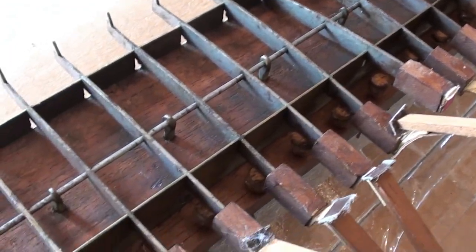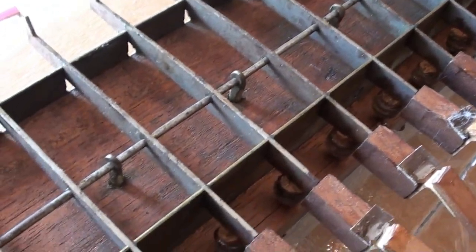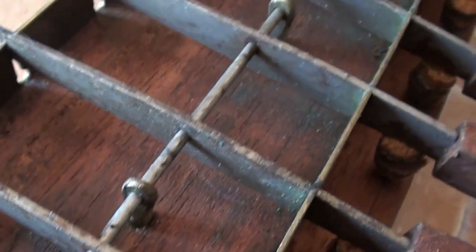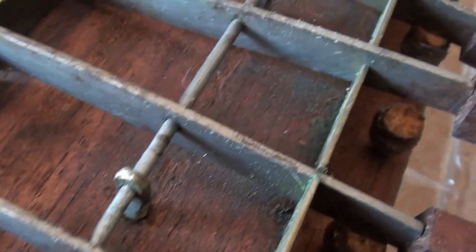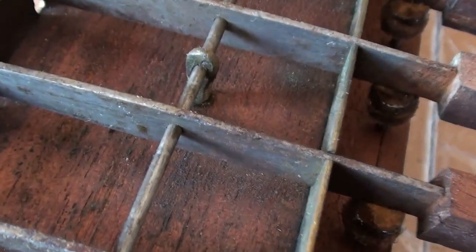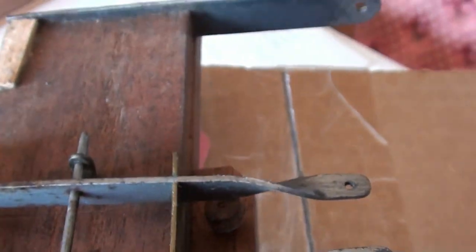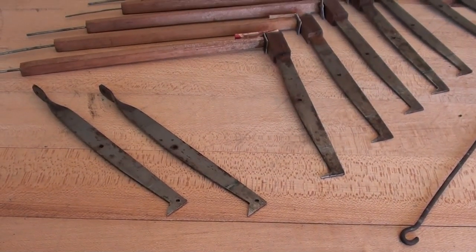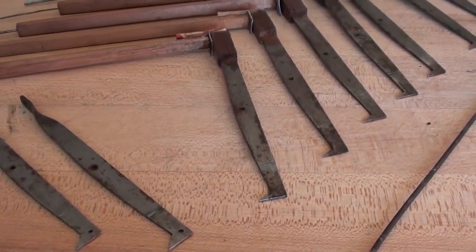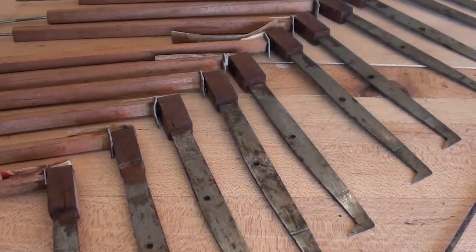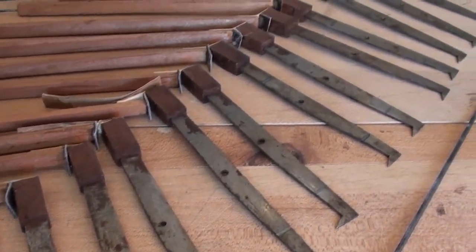This rod runs the length of the keyframe underside and creates the key pivot. Removing the rod released all the keys and sticker rods. I numbered all the pieces to keep the original order placement for the reassembly process.